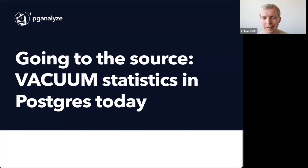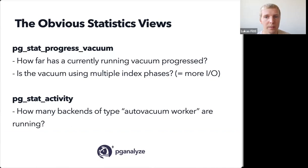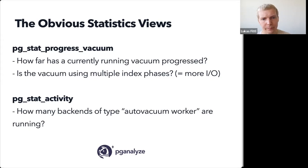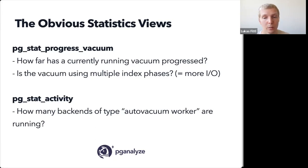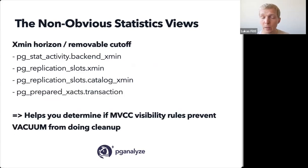Let's talk about Vacuum Statistics in Postgres. There are a couple of obvious statistics views. If you search for Vacuum Statistics Postgres, you'll find pg_stat_progress_vacuum, added in Postgres 9.6. It mostly tells you if there is a currently running vacuum and how far along it is, whether the vacuum is using multiple index phases, and a couple of other aspects. There's also pg_stat_activity — if you want to understand how busy your system is with autovacuum, you can look at backend type autovacuum worker to understand how many workers are currently running.